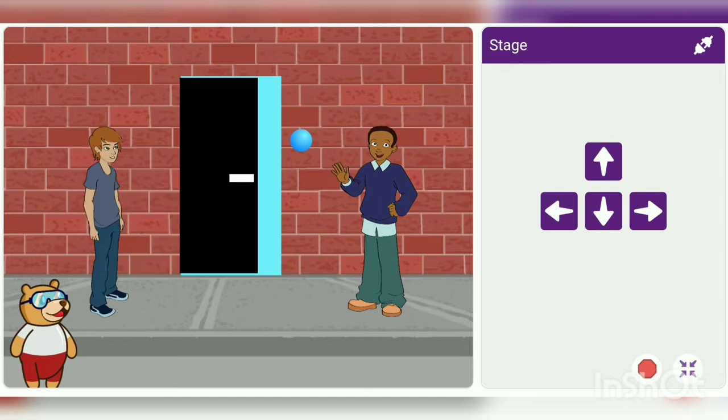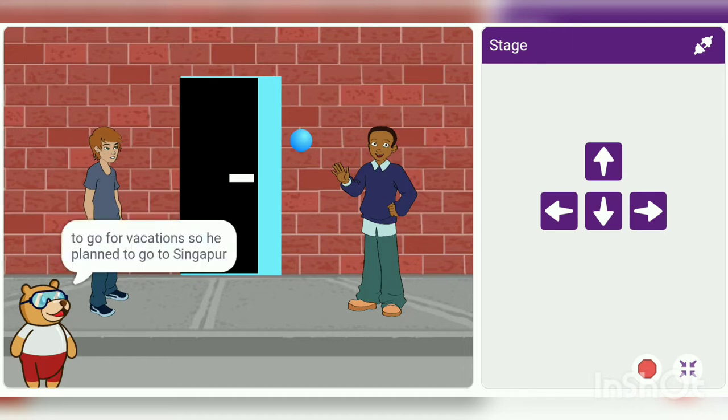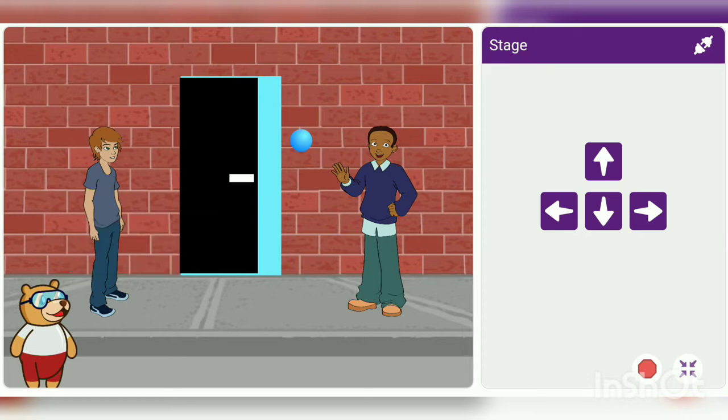A businessman named Mr. Sharma lived with his family in Bombay. As the summer vacations approached, Mr. Sharma's children demanded to go for vacations, so he planned to go to Singapore.